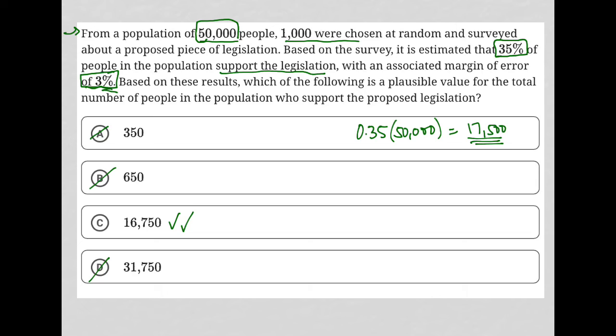If we really wanted to find the margin of error, you would just find 3% of 50,000, basically, which is 1,500. And then you could say that our answer should be somewhere between 17,500 plus 1,500, which is 19,000.